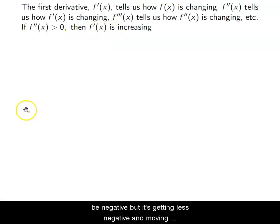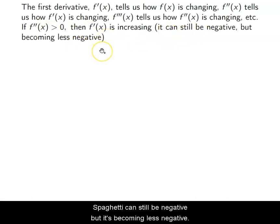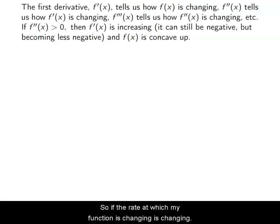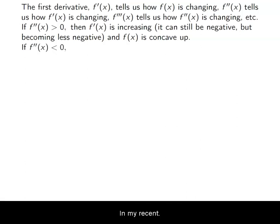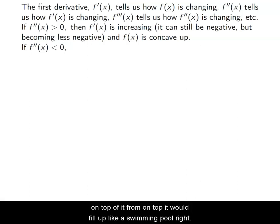We're going to focus on just getting to the second derivative and what that means for our function. If our second derivative is positive, then my first derivative is increasing in value — it doesn't necessarily mean the first derivative is positive, just that it's increasing. So my first derivative can be negative but getting less negative and moving toward a positive direction. What that means for my function is that the rate at which it is changing is changing, which signifies curvature. When my second derivative is positive, my original function is concave up — bowl-like in nature. If you poured water in from on top, it would fill up like a swimming pool.